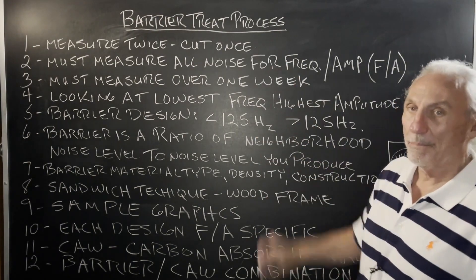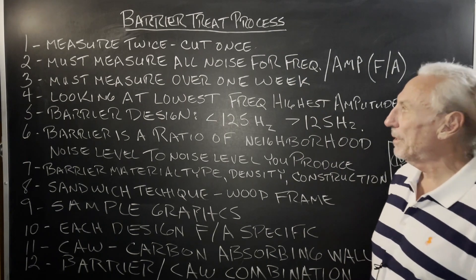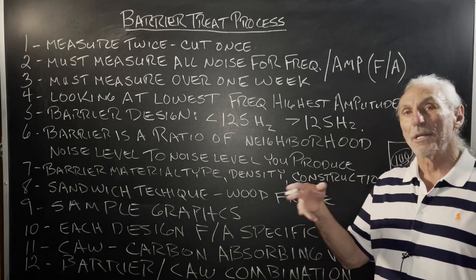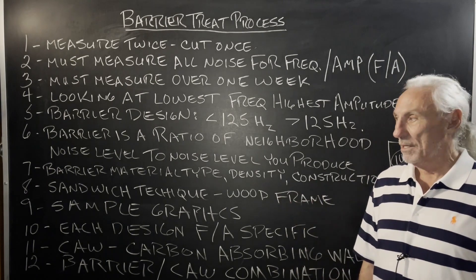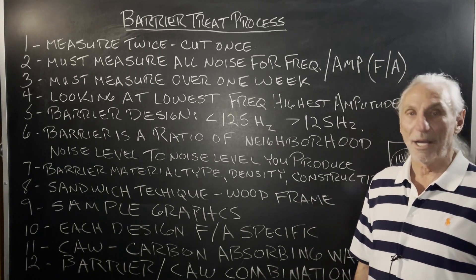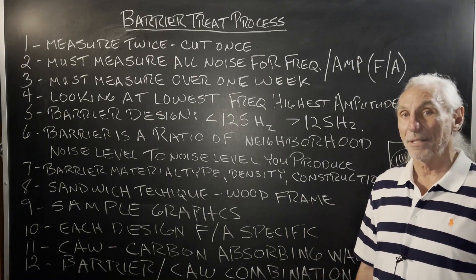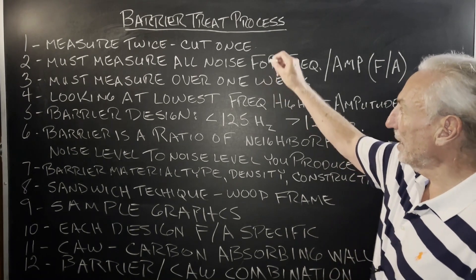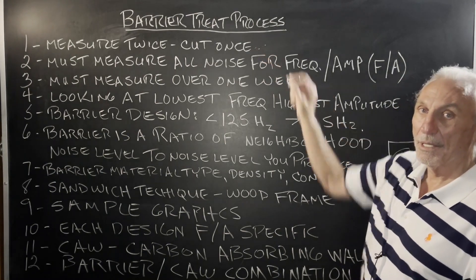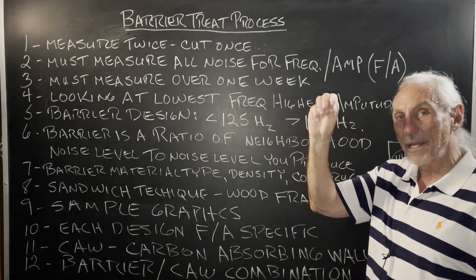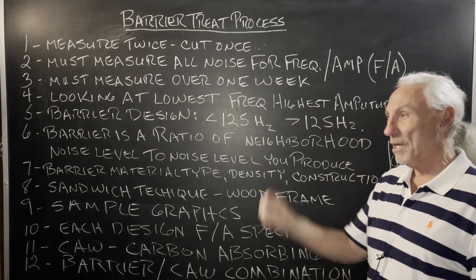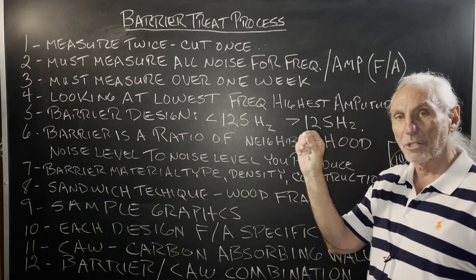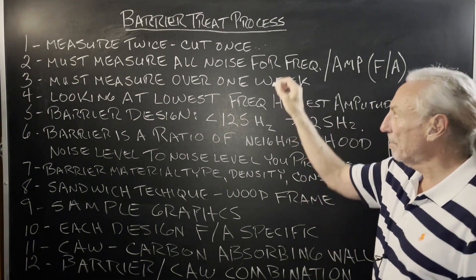If anything could be more true in this case with barrier design, it's to measure twice and cut once — the old carpenter adage that guys in my shop use constantly, and say it to me because I forget too. You've got to really have numbers here, because everything depends on those noise numbers: the material type, the cost, the construction methodology — everything is dependent on that.